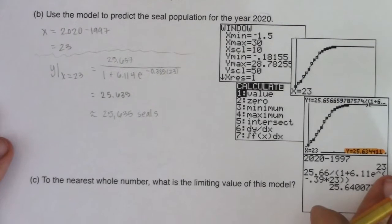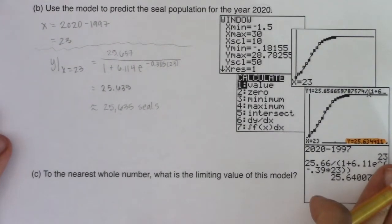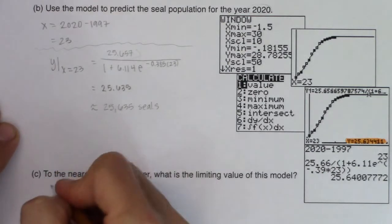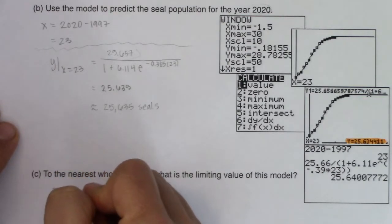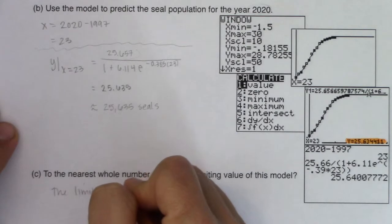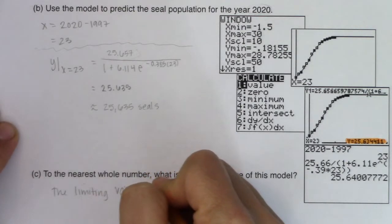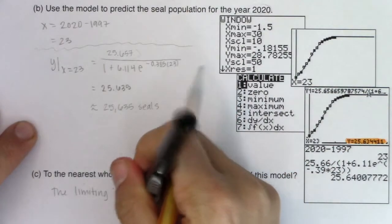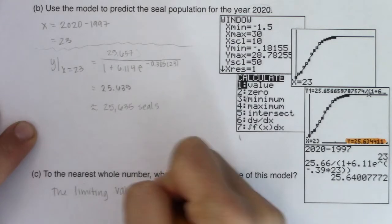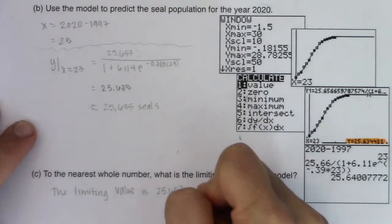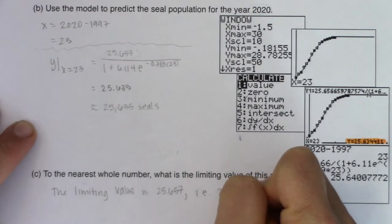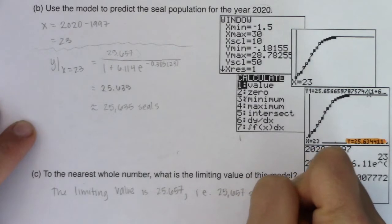And the last question here, it says to the nearest whole number, what is the limiting value of this model? Well, the limiting value of this model is always your C value. It's always your carrying capacity. So the limiting value or the carrying capacity in this particular example is 25.657. Or if you wanted to frame it a different way, you would say that was 25,657 seals.